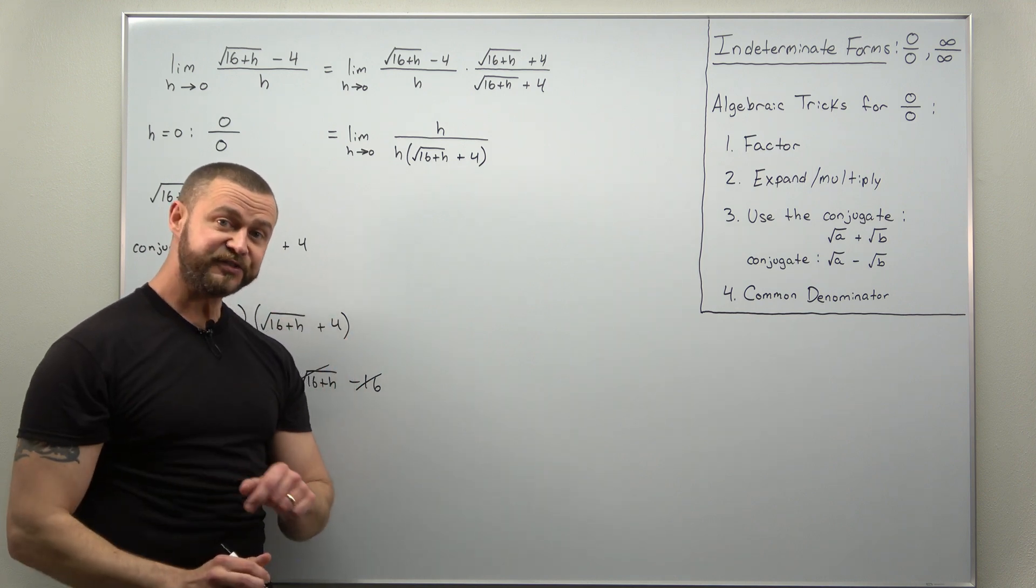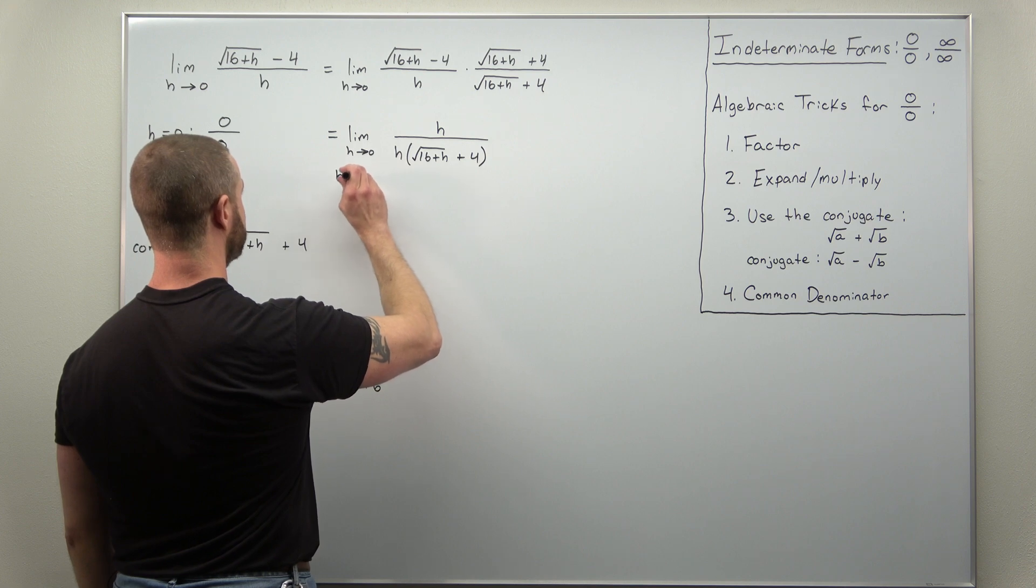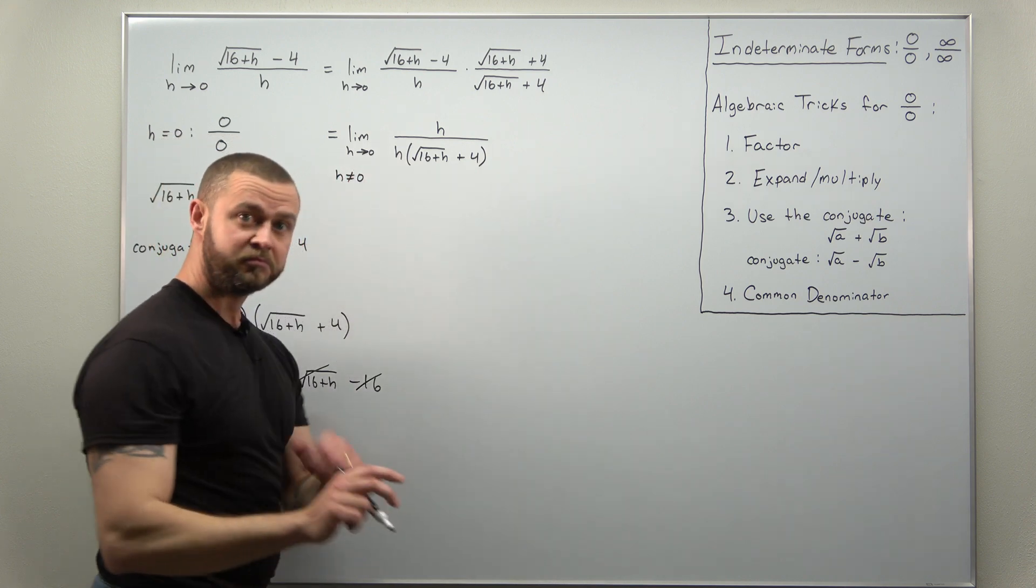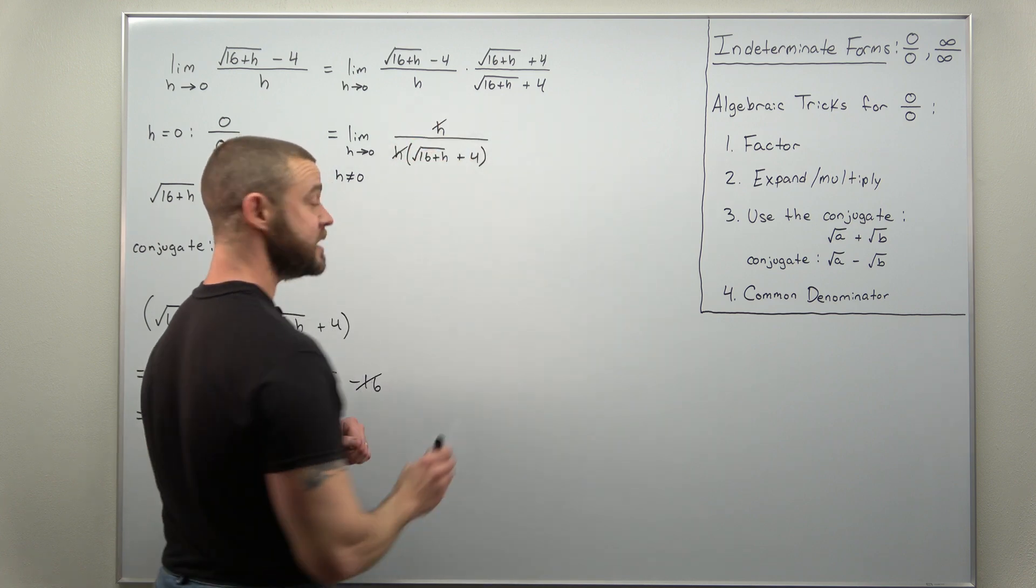And it's at this step that the indeterminate form cancels. Since we're taking a limit as h approaches 0, h never equals 0. So you can cancel them out.